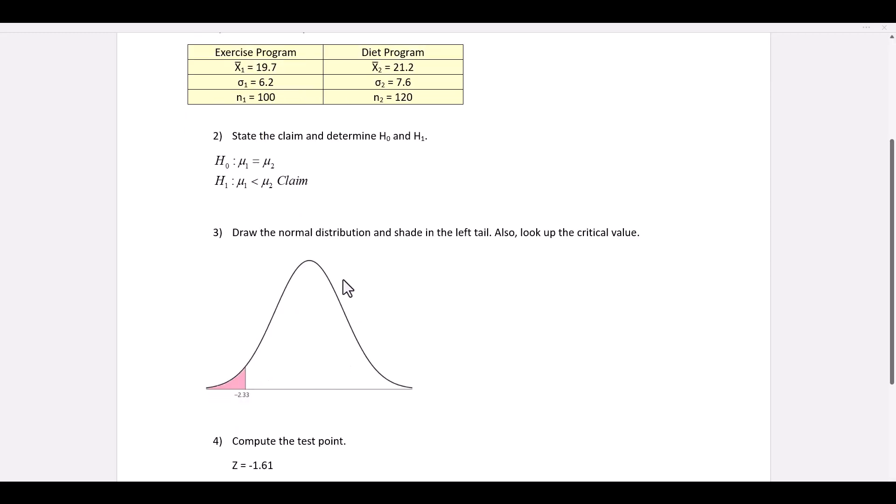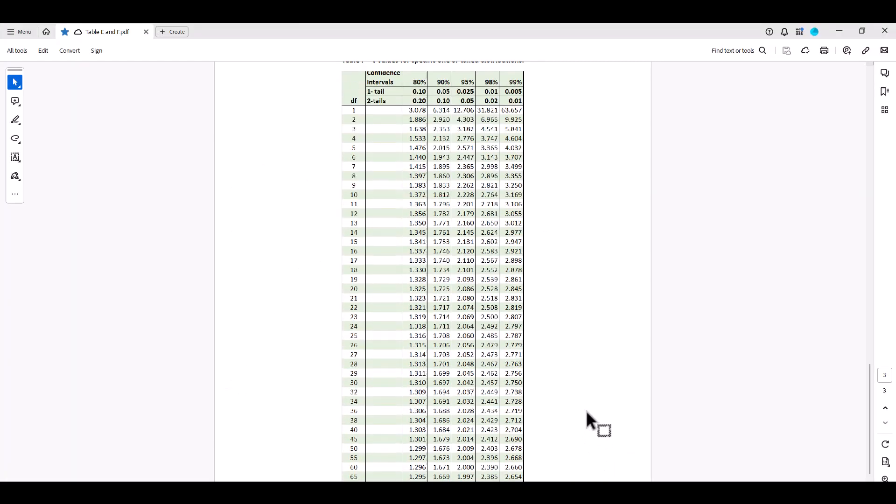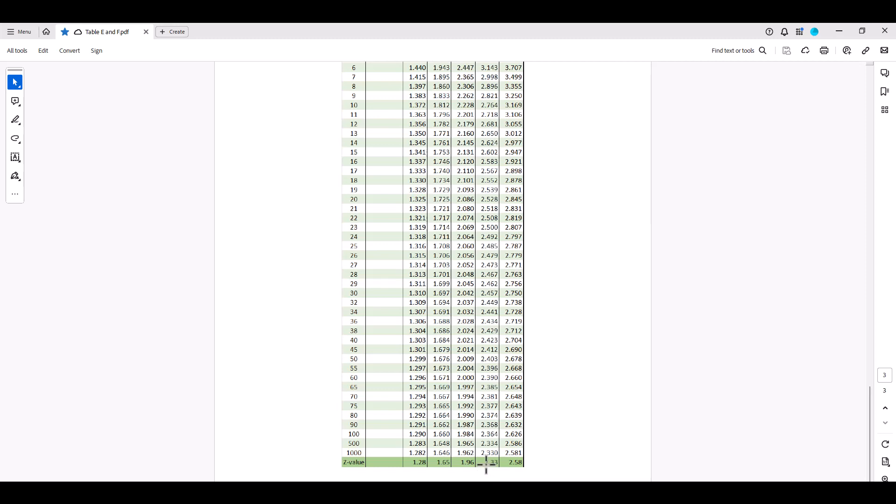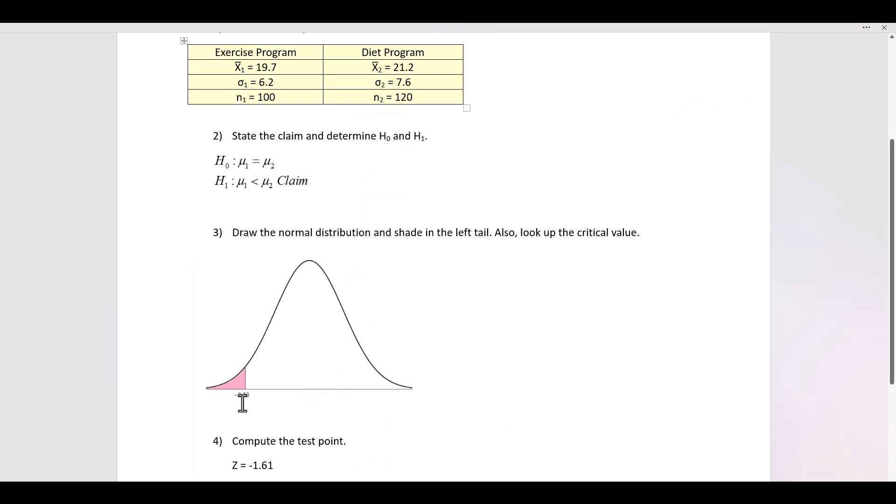We draw the normal distribution. Since it's less than, we have a left tail test. We look up the critical value in table F. It's a one tail test, 0.01. 2.33 is the value. Since it's on the left side, it's negative 2.33.